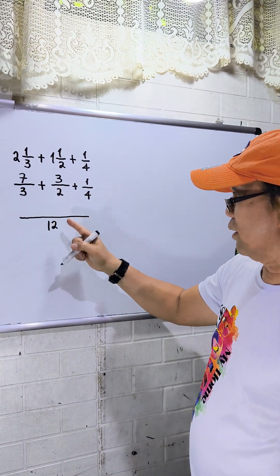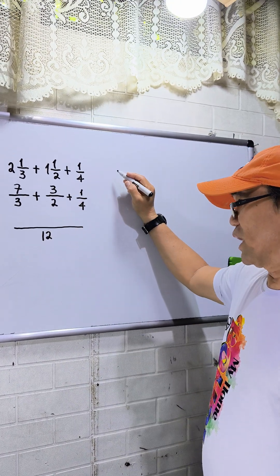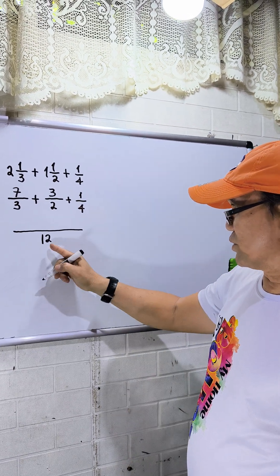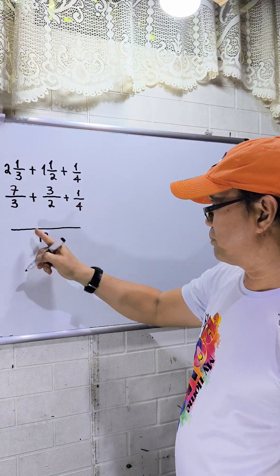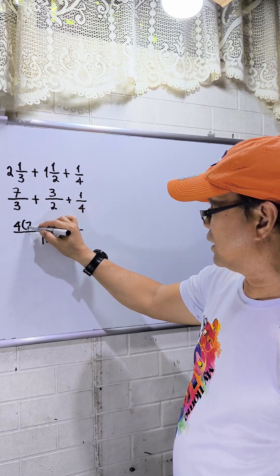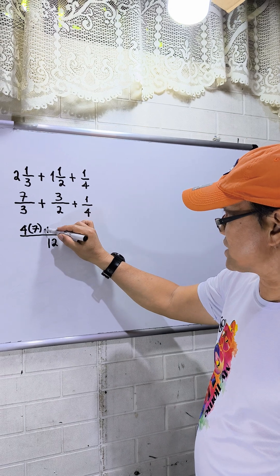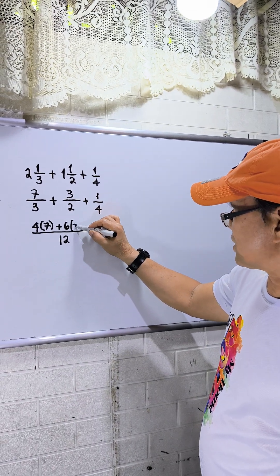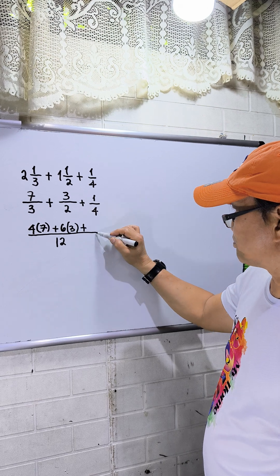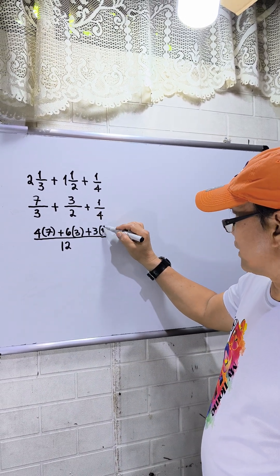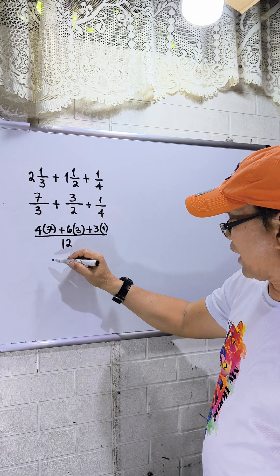12 divided by 3, that is 4, then multiply by the numerator which is 7. Then plus 12 divided by 2, that is 6 times 3, plus 12 divided by 4, that is 3 times 1.